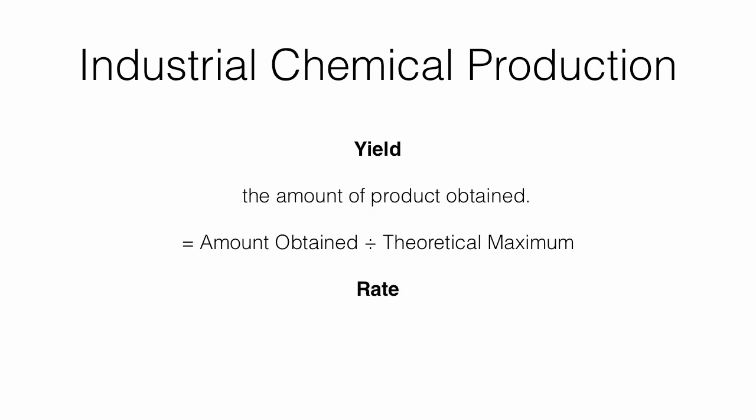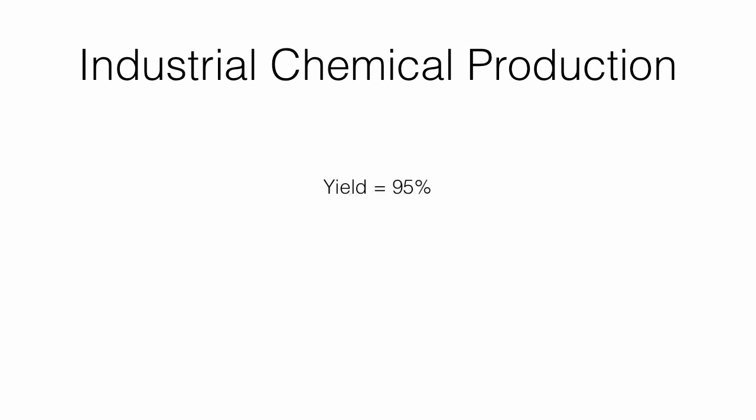Rate is also important, which is how fast the chemical process goes. To illustrate the interplay between yield and rate: you could have a fantastic yield of 95% — the factory manager is very happy that you, the chemical engineer, designed this process with such a high yield. But he's very sad to find out it takes five years to get that 95% product off the reactants. So obviously, both yield and rate are important.